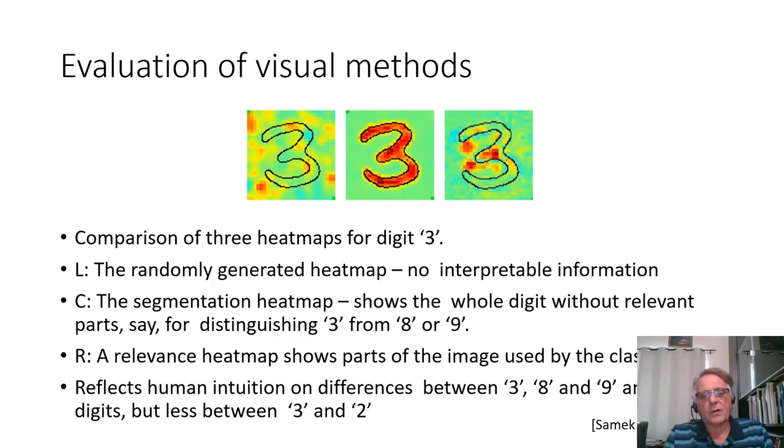Evaluation of explanation of how correct visual methods are a little bit easier than when we have abstract rules. Let's consider this situation with digit 3. On the left, we have a randomly generated heat map that do not provide any interpretable information to separate 3 from other digits, say 8 or 9. In the middle, we have a segmentation heat map that shows the whole digit without relevant parts for distinguishing from 8 or 9. And finally, on the right, we have a relevance heat map that shows parts of the image used for classification.